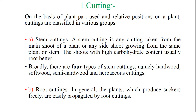First we consider cutting. On the basis of plant part and relative position on the plant, cuttings are classified into four groups: stem cutting, root cutting, leaf cutting, and leaf bud cutting. A stem cutting is any cutting taken from the main shoot of the plant or any side shoot growing from the same plant. The shoot with high carbohydrate content usually roots better. There are four types of stem cutting based on nature of the wood: hardwood stem cutting, softwood stem cutting, semi-hardwood stem cutting, and herbaceous cutting.